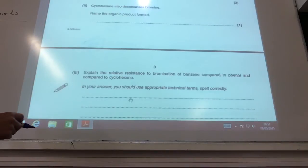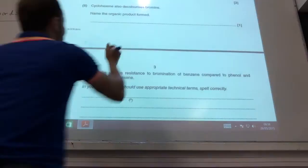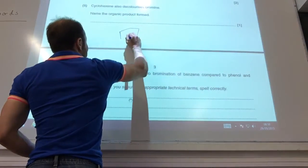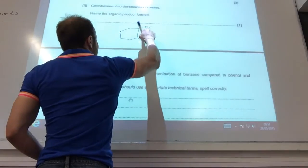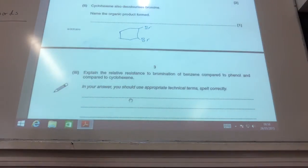Cyclohexene also decolorizes bromine, name an organic product formed. Obviously, it's going to be where the bromine is added across the double bond from cyclohexene. So it's 1,2-dibromocyclohexane.